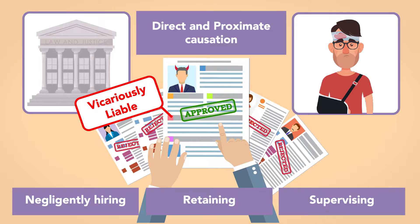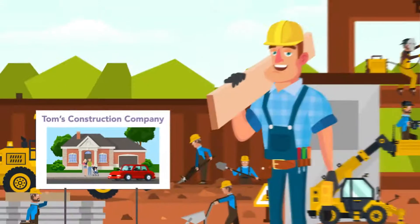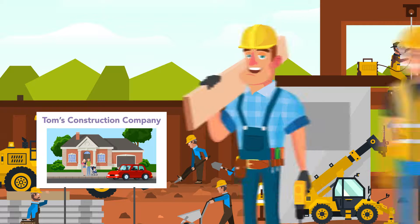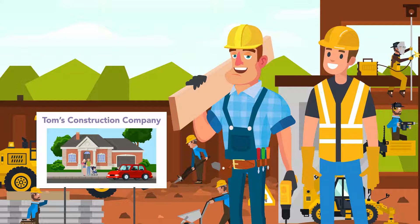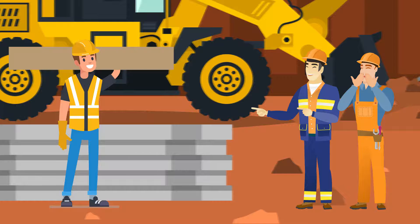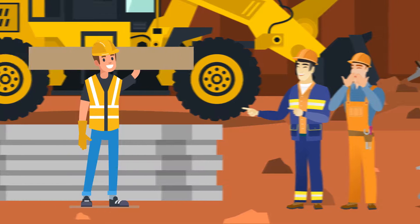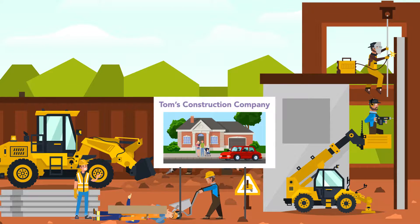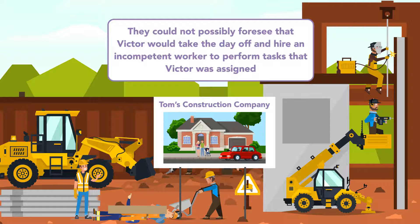Example: Tom's Construction Company hires Victor, a well-respected construction worker with 20 years' experience, to build the foundations of several small homes. One day, while on the job, Victor decides to take the day off and calls his friend David, asking David to travel to the job site and continue building the concrete foundation. David agrees, even though he has very little experience in this type of work. While David is working, two construction workers nearby ridicule David for what they perceive as substandard performance. David loses his temper and assaults both men, injuring one of them severely. Tom's Construction Company is not liable because they could not possibly foresee that Victor would take the day off and hire an incompetent worker to perform his assigned tasks.